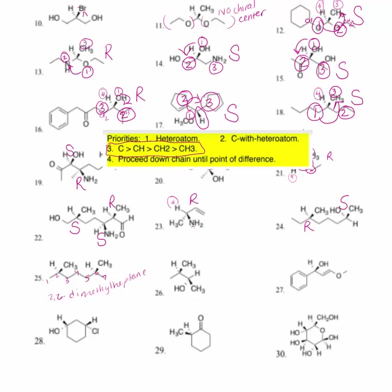Number twenty-six: this carbon has a methyl group here and a methyl group here — so it's not a chiral center. But this one is. The OH gets priority number one, H gets priority number four, the bulk of the molecule gets priority number two, and the methyl group gets priority number three. Pushing H to the rear and looking at the rotation, we are rotating clockwise with H to the rear, so this is an R configuration.